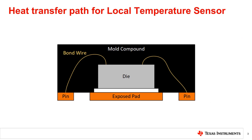Local temperature sensors determine temperature by measuring their own die temperature. Therefore, it is important to understand the dominant temperature conduction paths between the die of the temperature sensor and the object or environment whose temperature is to be determined. Heat is conducted primarily through the following paths. The leads and pins provide the most significant thermal path if the package type does not include a die-attached pad or DAP.